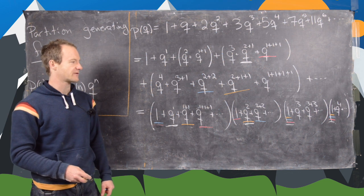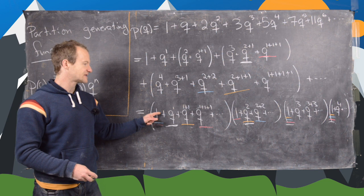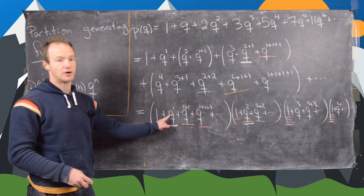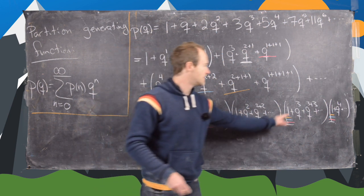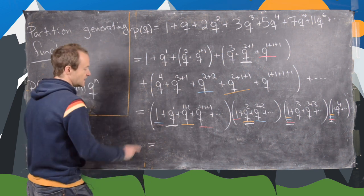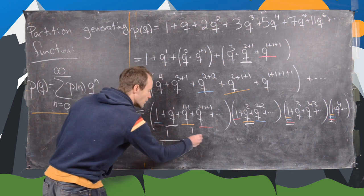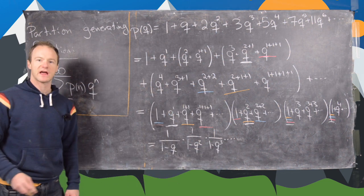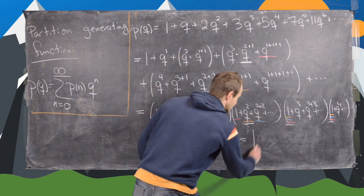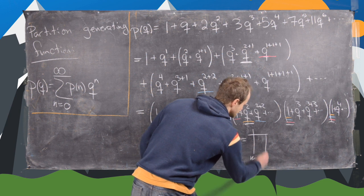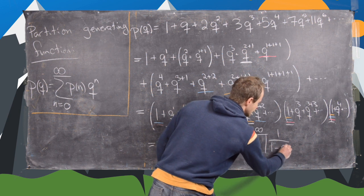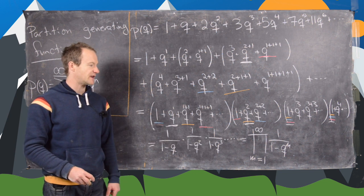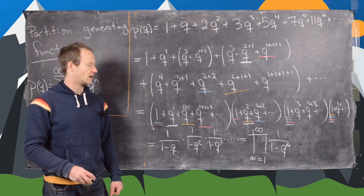Each of these factors is a geometric series: the first has common ratio Q, the second Q², the third Q³, and so on. So each sums to 1/(1−Q), 1/(1−Q²), 1/(1−Q³), etc. Therefore P(Q) equals the infinite product ∏_{m=1}^{∞} 1/(1−Q^m). We'll stop here and pick up in the next video where we prove partition identities using the appropriate generating functions.